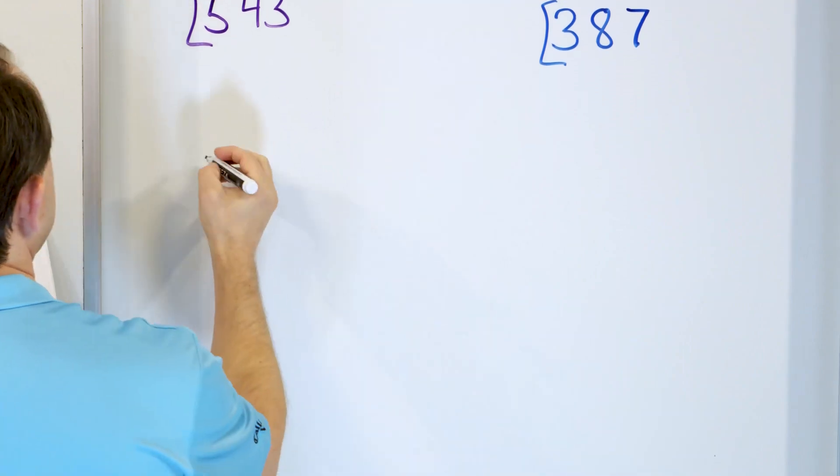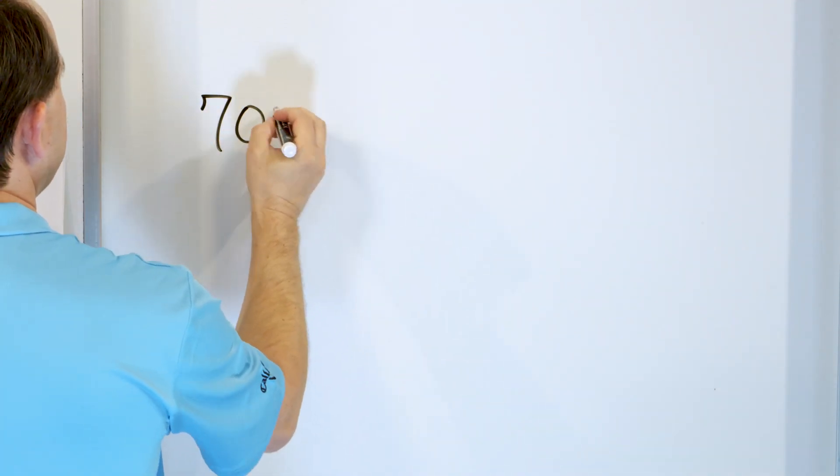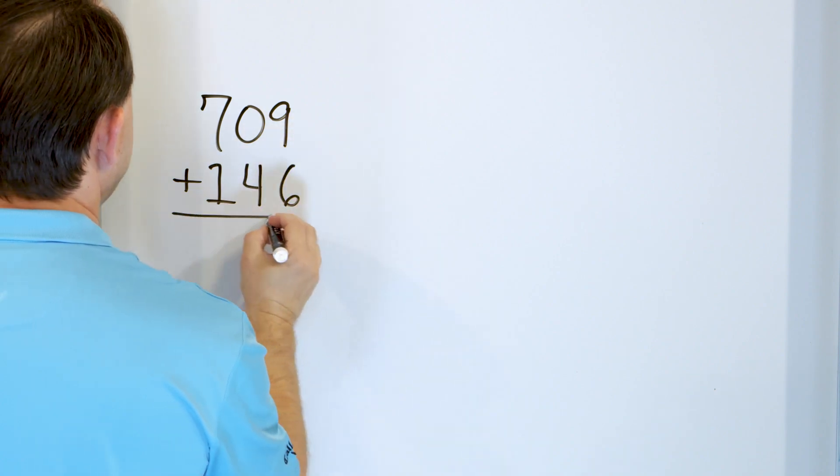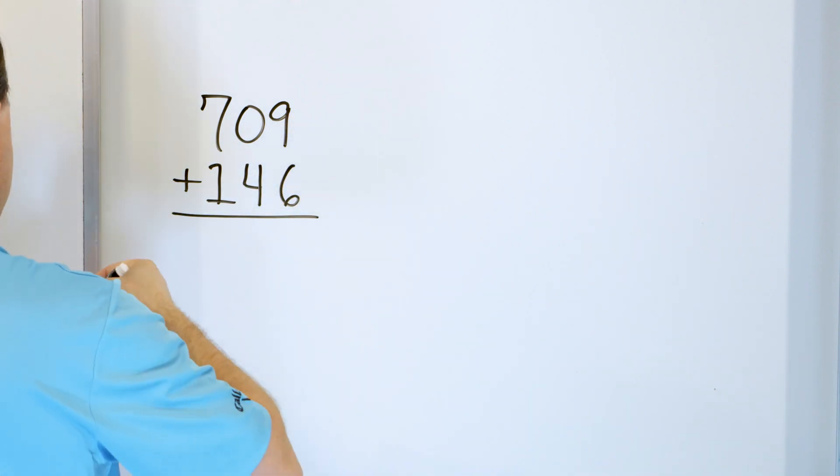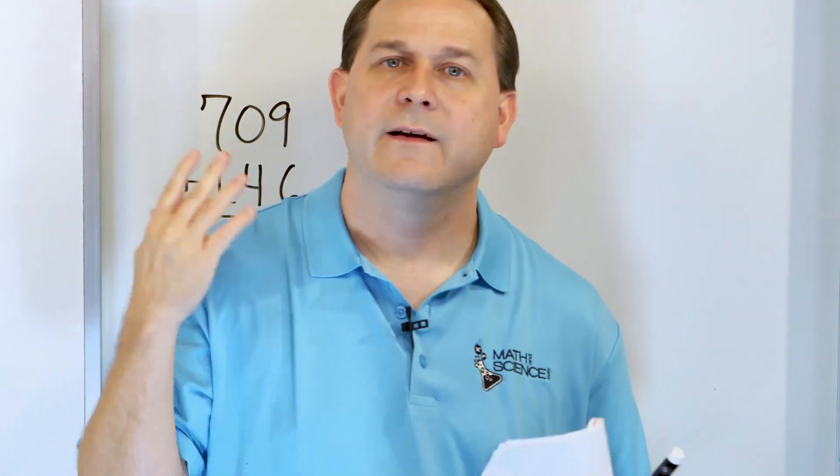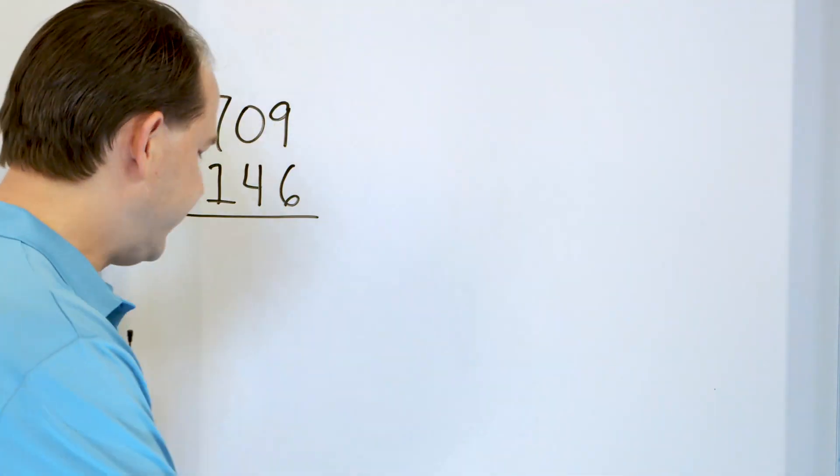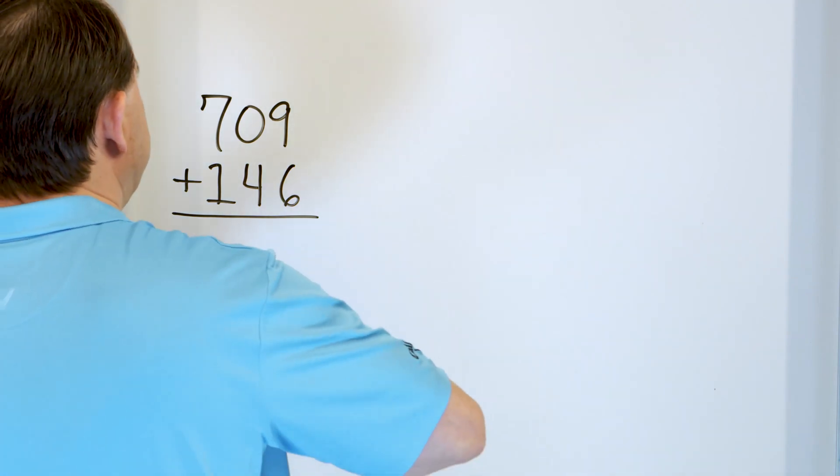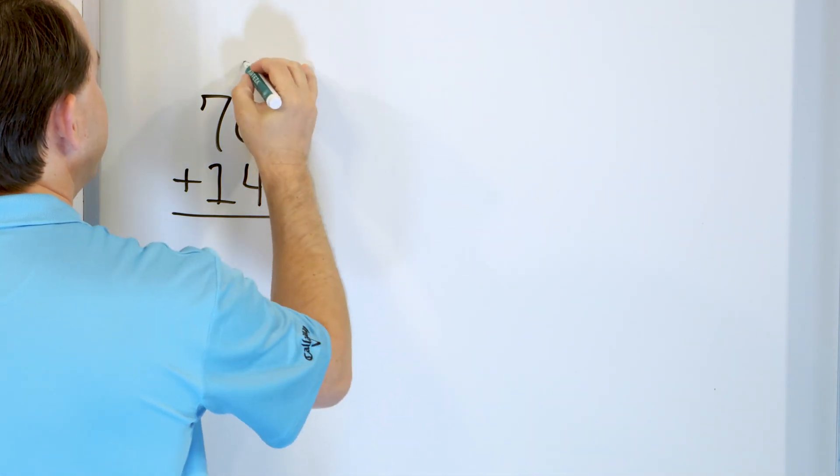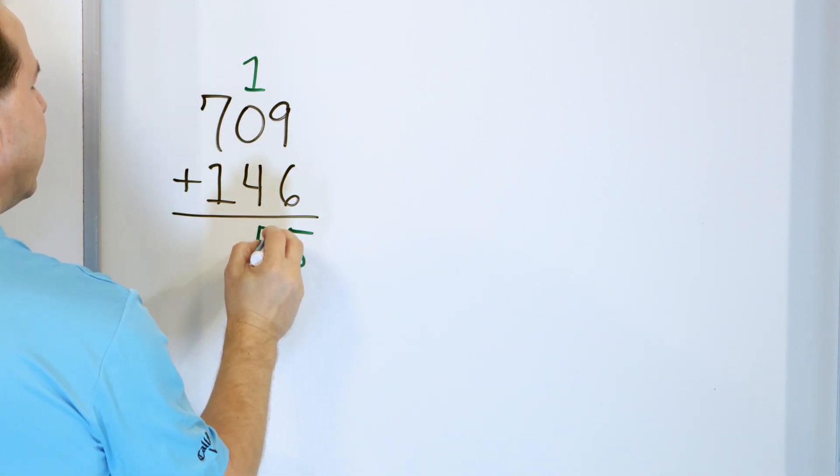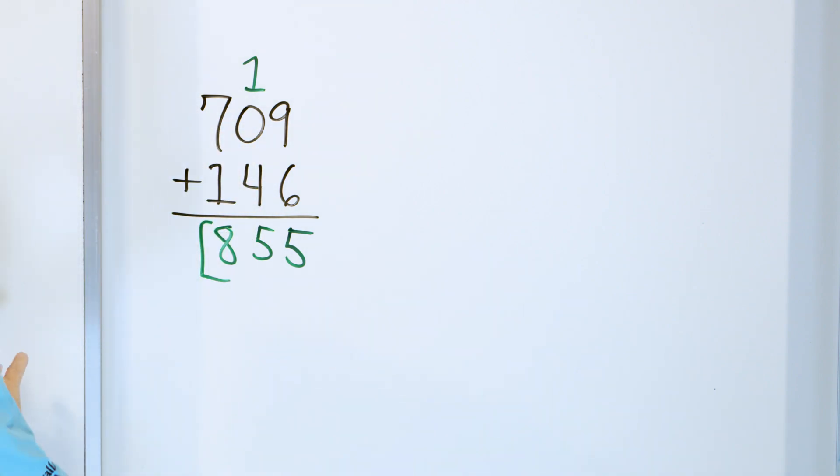Only two more problems. Let's say we have 709. And I'm going to add to that 146. Again, 9 plus 6. What is it? Quick. 9 plus 6, it's 15. It has to be. Because if it were 10 plus 6, it would be 16. But it's not. It's 9 plus 6. So it has to be 15. 15 is a two-digit number. So we put a 5 and we carry a 1 here. 4 plus 1 is 5. The 0 does nothing. So a 5 goes here. And then 7 plus 1 more is 8. So the answer is 855.